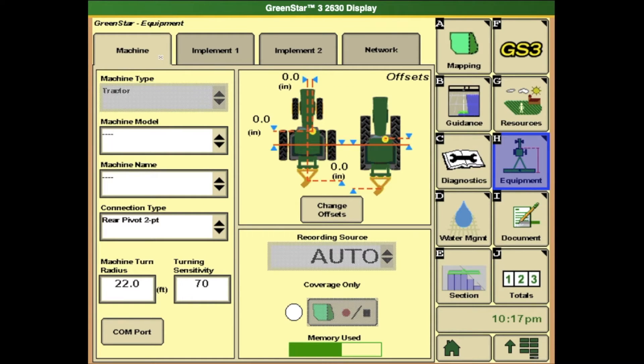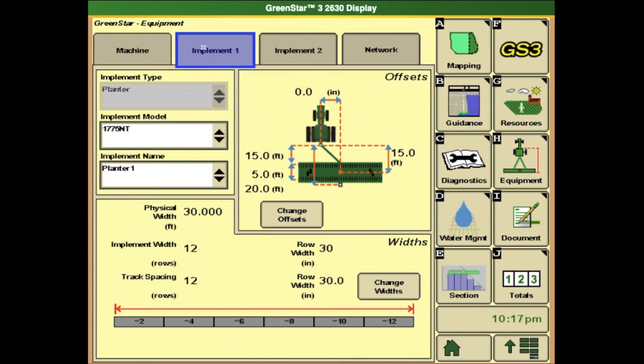In the equipment section at the top, you'll see the machine profile and next to it the implement profile. Select your implement profile, as that will be your planter.